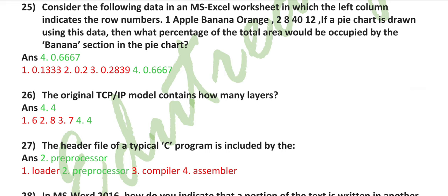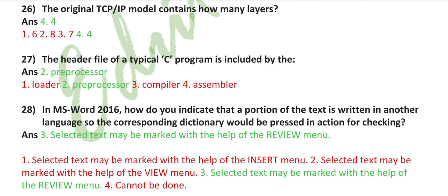Consider the following data in an MS Excel worksheet in which the left column indicates the row number: first apple, banana, orange; second 8, 40, 12. If a pie chart is drawn using this data, then what percentage of the total area would be occupied by the banana section in the pie chart? 0.6667 or 66.67%.